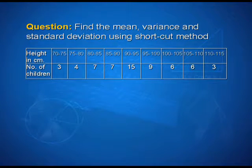Height in centimeters are the observations given lying between 70 to 75, 75 to 80, 80 to 85, 85 to 90, and so on, varying till 110 to 115. And number of children corresponding are 3, 4, 7, 7, 15, 9, 6, 6, 3.